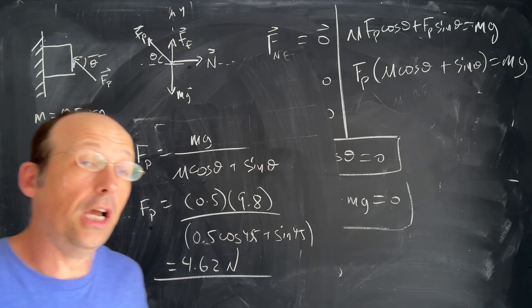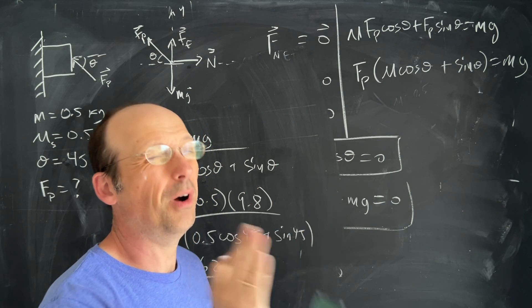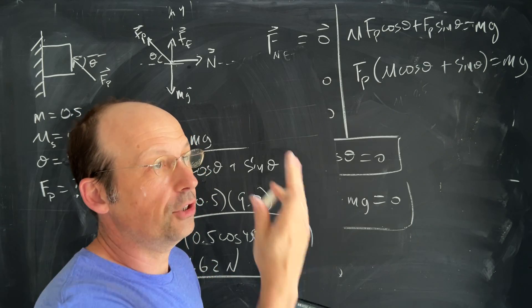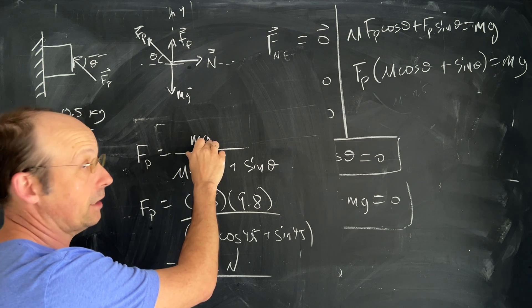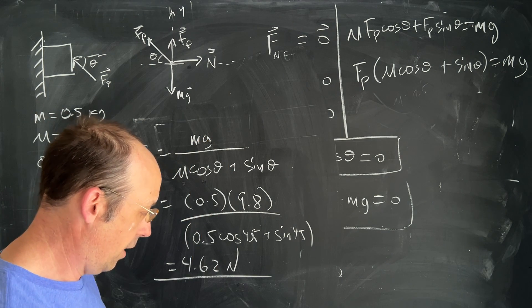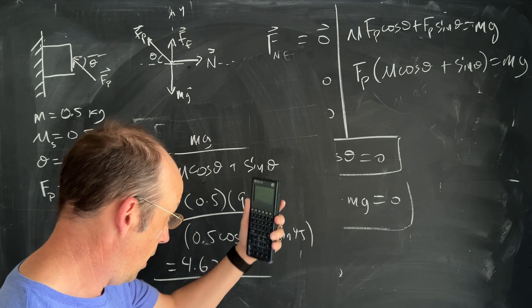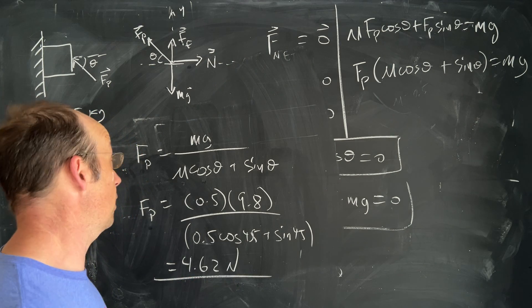Now let's just check. I'll show you in a second but let's just compare that to if I hold the thing straight up. mg would be the mass times g, that's the net force so if I put in 0.5 enter 9.8 times I get 4.9 so this is actually a little bit less than that, actually kind of surprising.